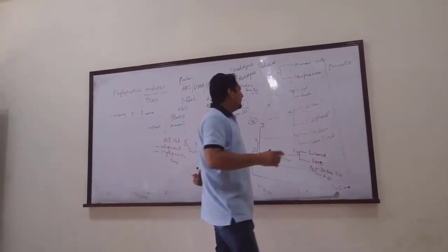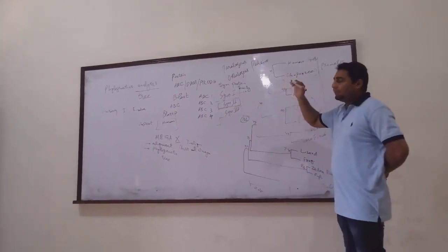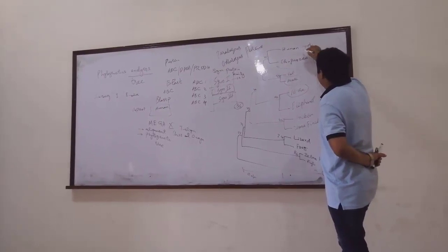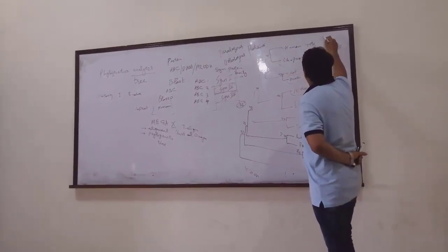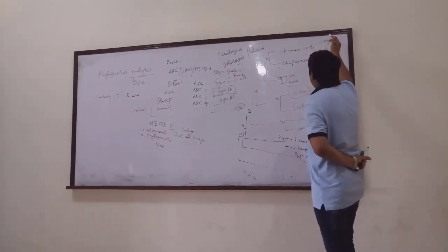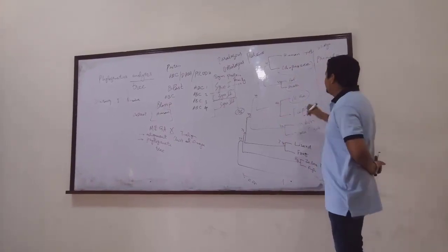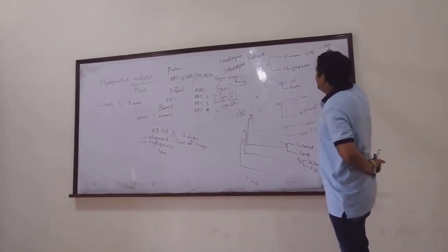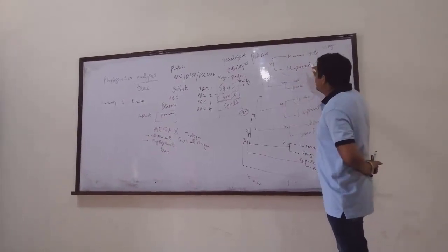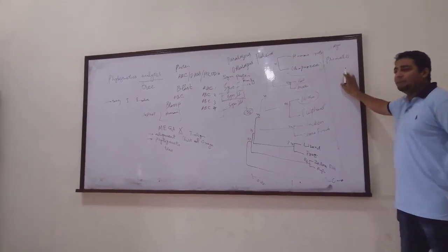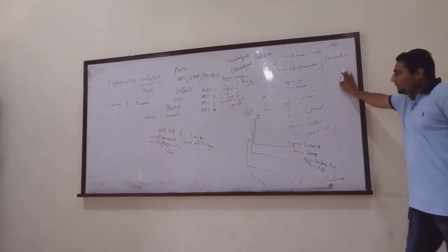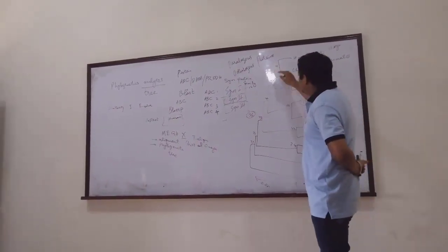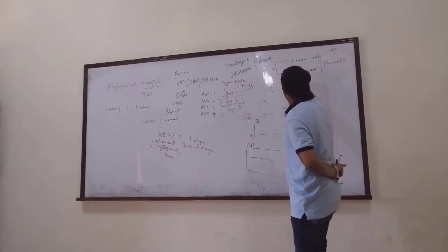Usually, you just read some articles and you will see values like 35 MYA — this means 35 million years ago. So it is considered that the human clade diverged 35 million years ago. These values are known as bootstrap values.